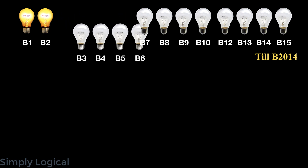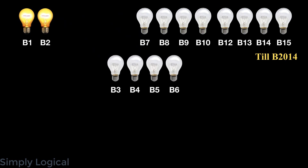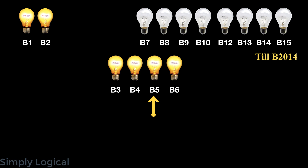Let's understand with an example. Create a group of four bulbs: B3, B4, B5, B6. Remember, B1 and B2 are already on. Initially all four bulbs are off. First, choose the second bulb in the group (B4) and turn its neighbors B3 and B5 on. Now choose the third bulb (B5) and turn its neighbors B4 and B6 on. By doing this, all four bulbs B3, B4, B5, B6 are in the on state.